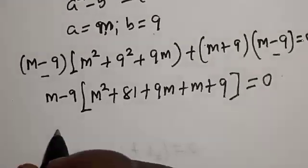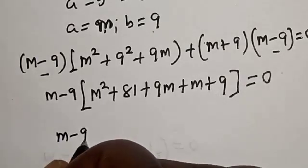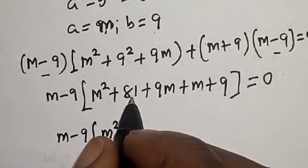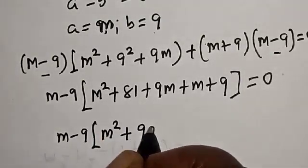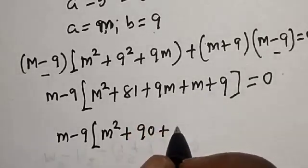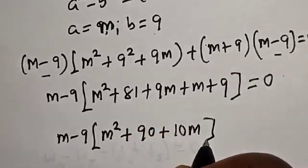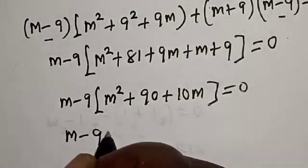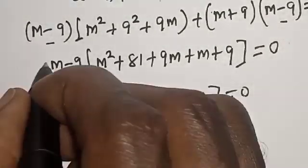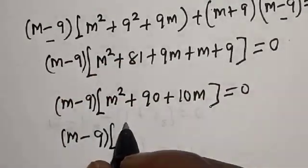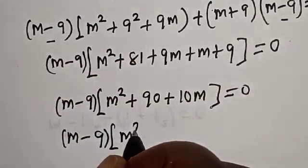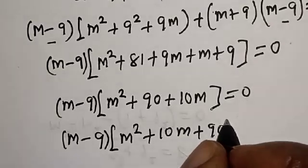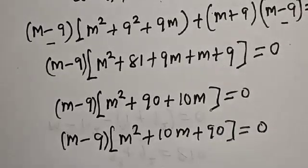Now, we have m minus 9 here and m minus 9 here — let's bring it out. m minus 9, into m squared plus 81 plus 9m, then plus m plus 9, is equal to 0. This simplifies to m minus 9, into m squared plus 9m plus m plus 90, which is m squared plus 10m plus 90, is equal to 0.